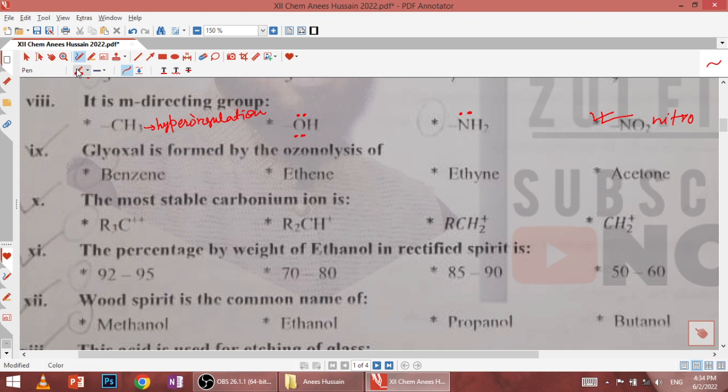Ninth, glyoxal is formed by the ozonolysis of what? When we do ozonolysis of benzene with ozone, first our triozonoid forms, then finally we get glyoxal which we call in IUPAC 1,2-ethanedial.